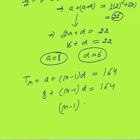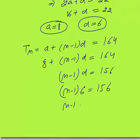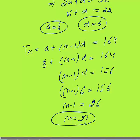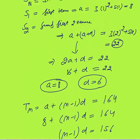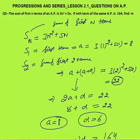Substituting: 8 + (m−1)×6 = 164, so (m−1)×6 = 156. Dividing: m − 1 = 26, therefore m = 27. The answer is m = 27. You can see how I solved this question quickly — you must know the concept and your calculation speed must be fast. That was all about Progressions and Series, lesson 2.1.